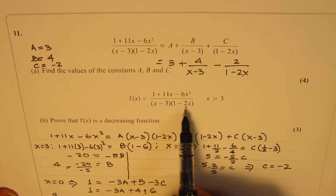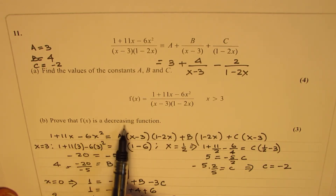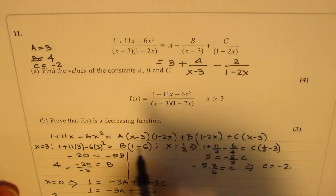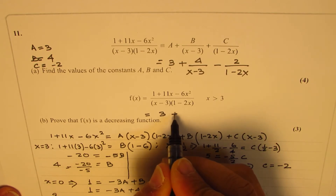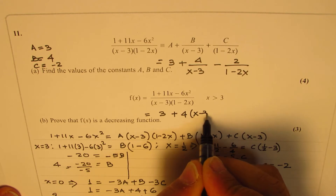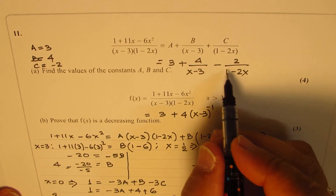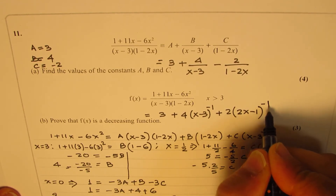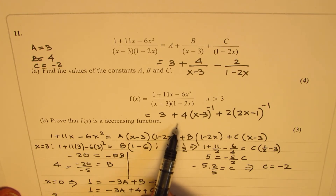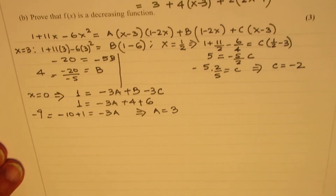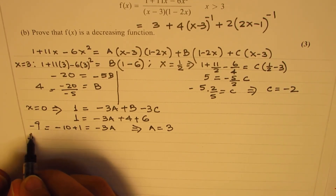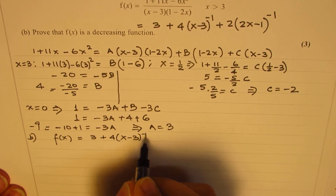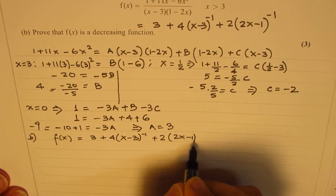Now we'll do part 2, which is to show that this function is decreasing for x greater than 3. We can write the expression as 3 + 4(x - 3)⁻¹ + 2(2x - 1)⁻¹. So for part b, f(x) = 3 + 4(x - 3)⁻¹ + 2(2x - 1)⁻¹. Now to show that this is decreasing, we need to find the derivative.